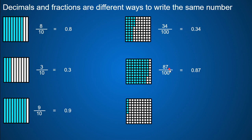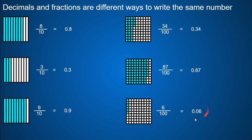Once again, 87 divided by 100 will equal 0 and 87 hundredths. And the last one — there is 6 out of 100 shaded in. So this is 6 hundredths, and that is going to be equal to 6 hundredths. This is 6 hundredths because there are two decimal places, and whenever I have two decimal places, the last name of that decimal is hundredths. So this is 0 and 6 hundredths. And if I did 6 divided by 100 in the calculator, this is what would show up.